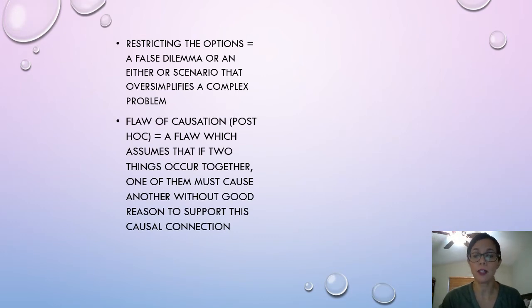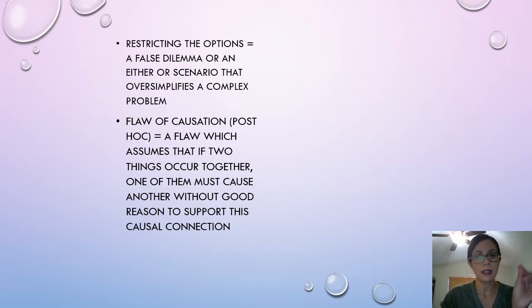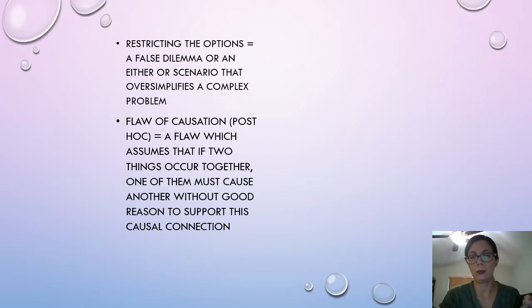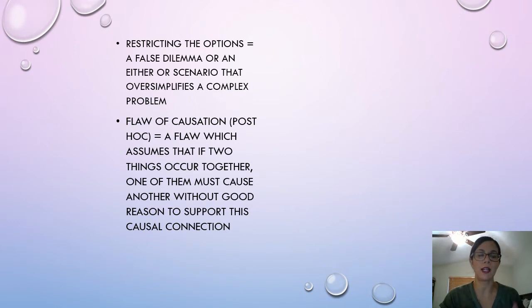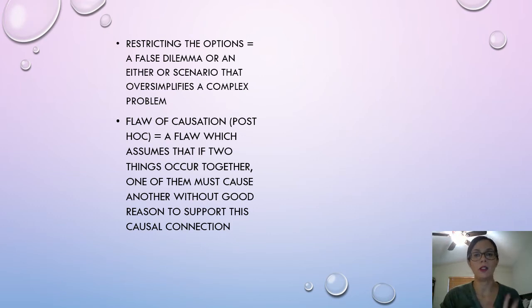Next, you have flaw of causation, which is a really common type of flaw. It's basically saying that an occurrence that happened before another event is what led to it. Flaw of causation is common because it's very hard to prove that just one factor led to an event occurring — typically, there are many factors at play. Sometimes there's a correlation between two things, but not necessarily a direct causation.